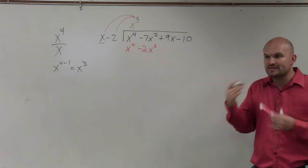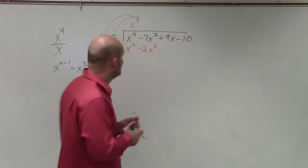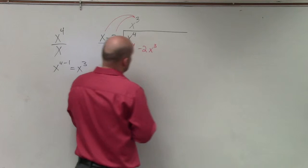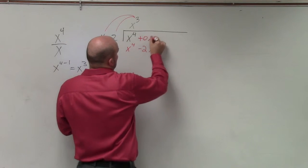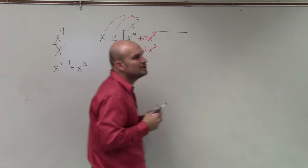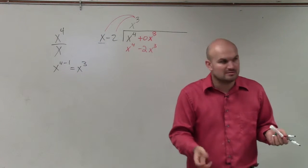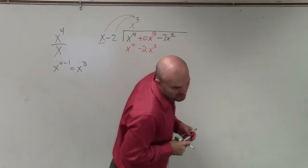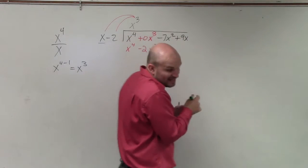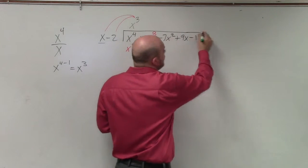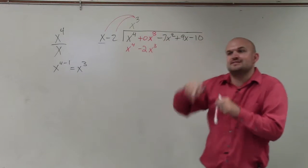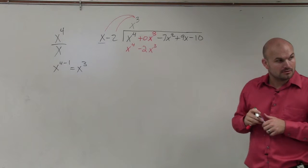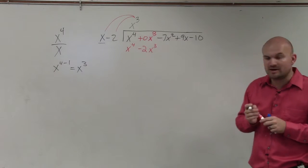When doing division, if you have a missing term, I recommend you just use 0x cubed as a placeholder, because 0x cubed is just 0. It serves as a place value. You can rewrite the problem with it written in, or just quickly write in the 0 so you know it exists. You don't have to write the 0 — you can just know it.